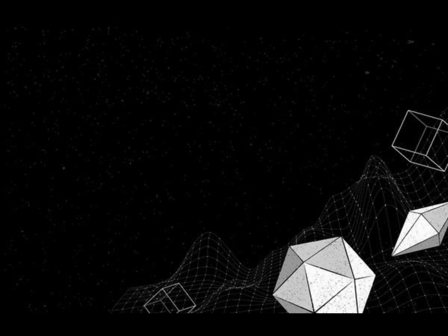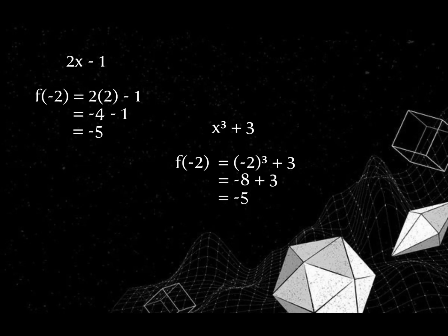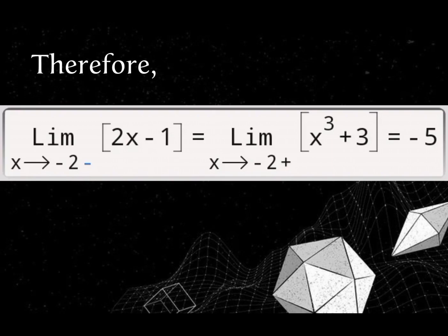To confirm our answer, we substitute x equals negative 2 into both pieces. For 2x minus 1: f of negative 2 equals 2 times negative 2 minus 1, which is negative 4 minus 1, equals negative 5. For x cubed plus 3: f of negative 2 equals negative 2 cubed plus 3, which is negative 8 plus 3, equals negative 5. Therefore, the limit of the piecewise function as x approaches negative 2 from the left equals negative 5, and from the right also equals negative 5.